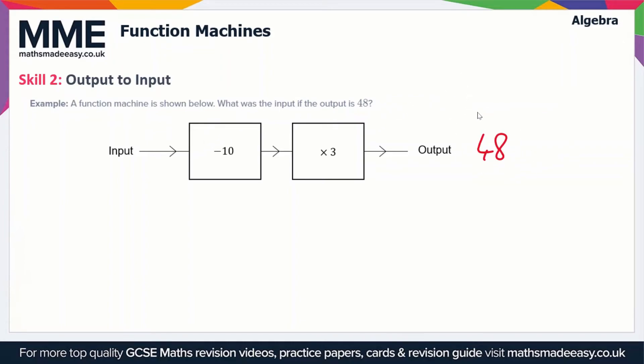So here, 48 is what's come out of the function machine. Now we need to go in the reverse order to work out what was put in in the first place. This is slightly more complicated. We're looking at operation 2 first. Let's label this 1 and 2. So something was multiplied by 3 to give us an output of 48. To find out what that is, we divide 48 by 3, which gives us 16.